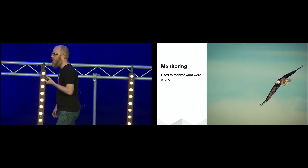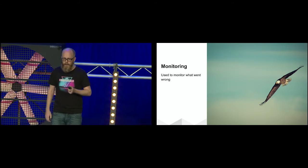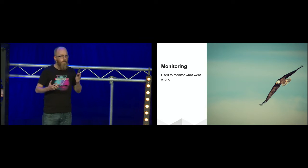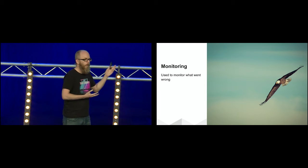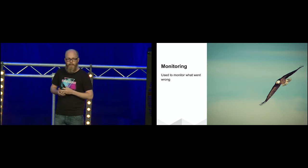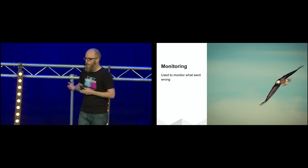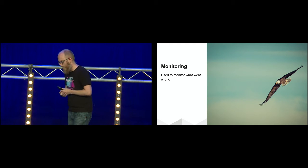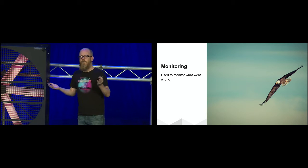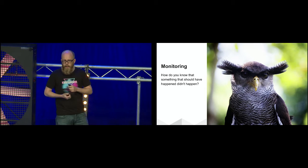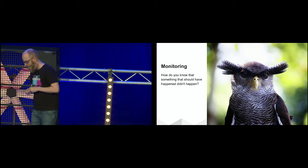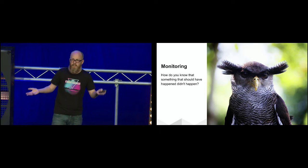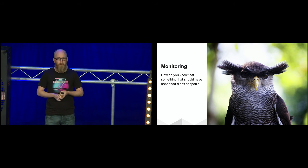The next thing we had problems with was monitoring — something we thought we were really good at, because when something goes wrong, we always notice. We monitor if we return 500s, if you can't reach neighboring applications, and everything like that. But when you emit events and you expect consumers to act on those events, it can also happen that something just doesn't happen. How do you know that something that should have happened didn't happen? There's no metric to read.